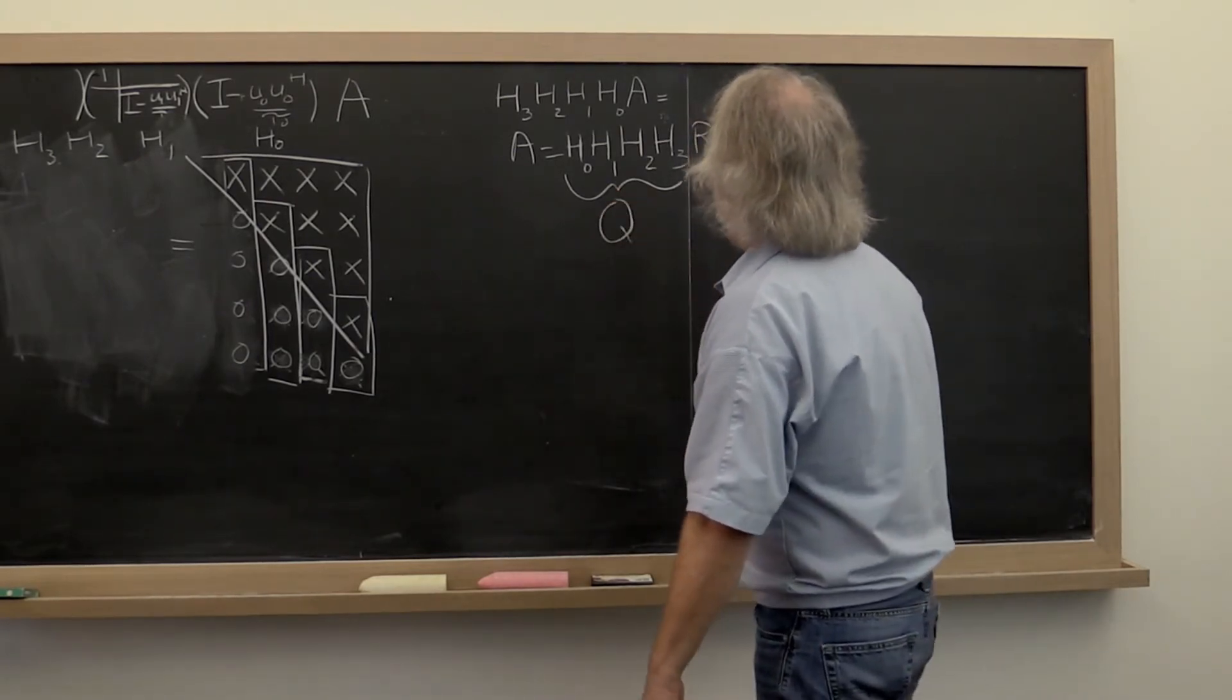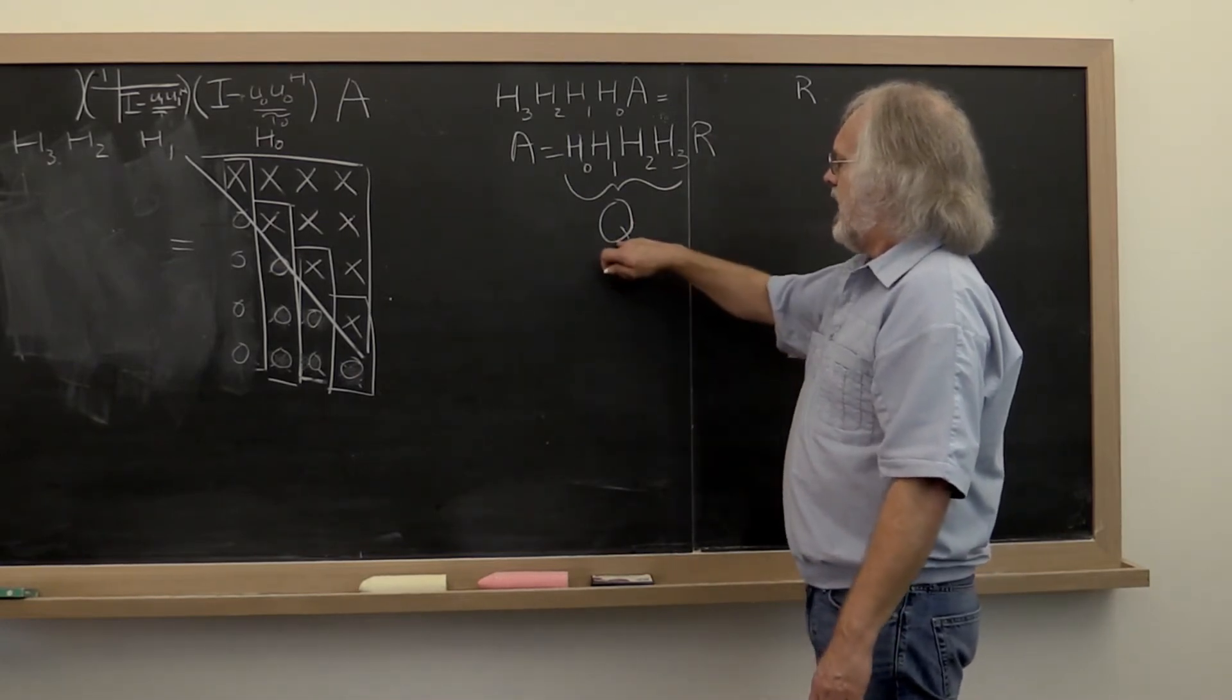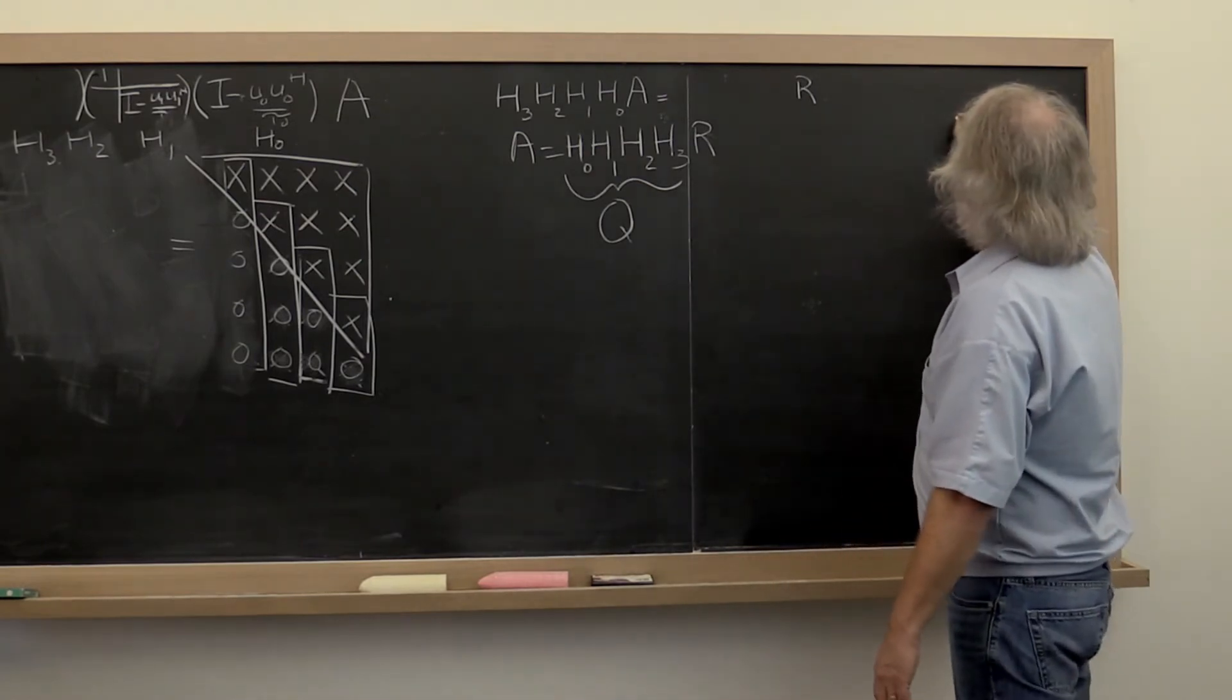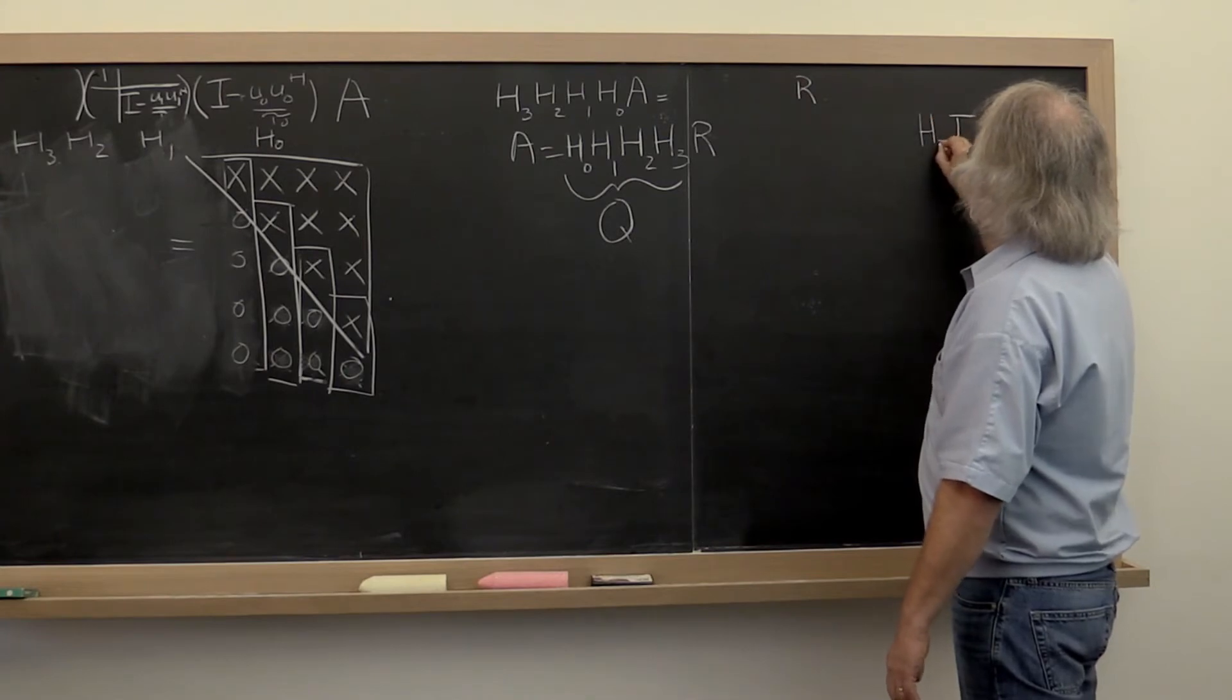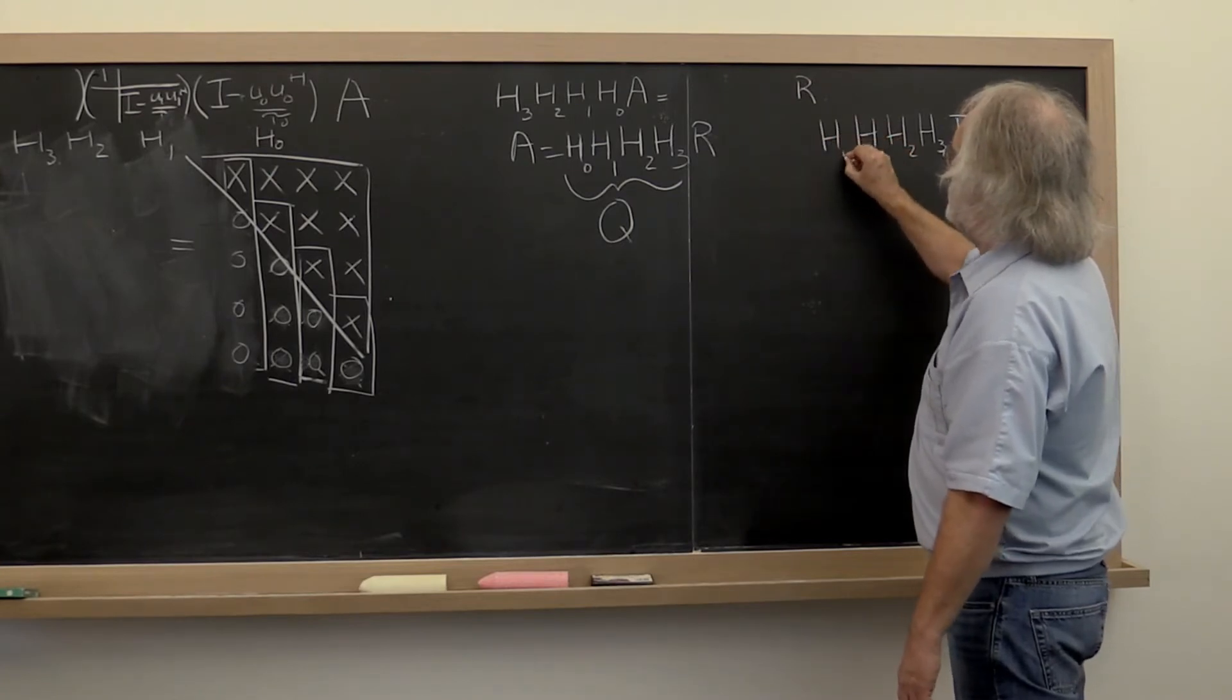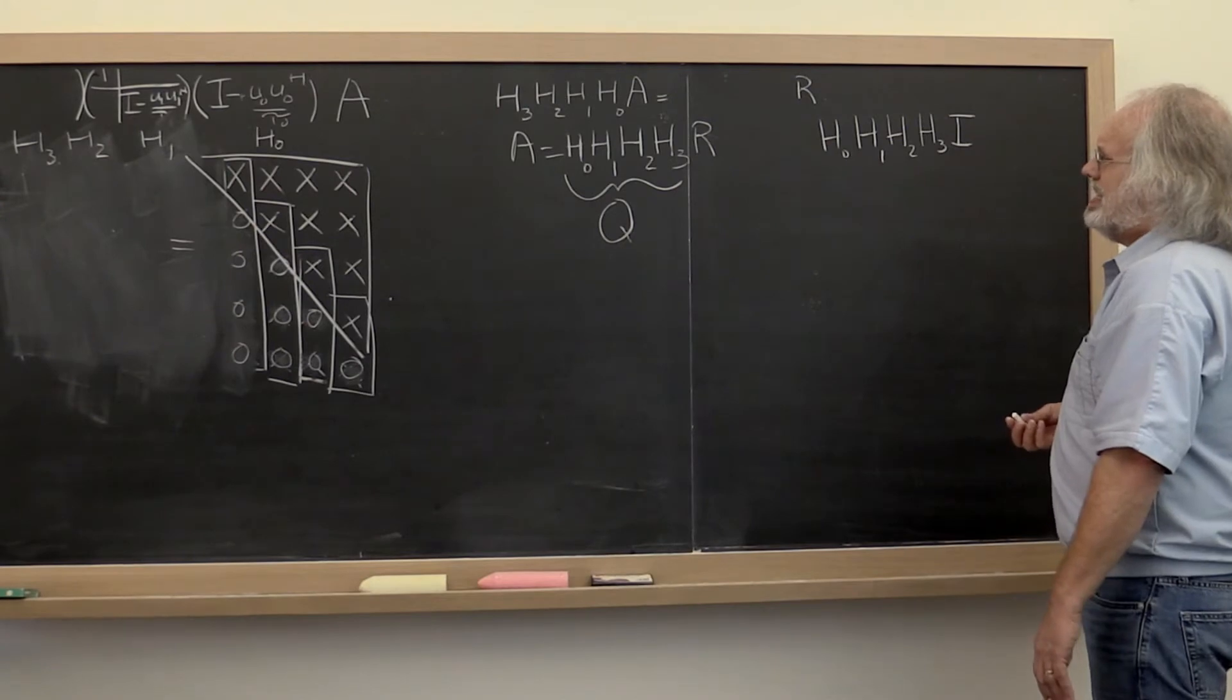So let's call that Q. The question then becomes how do we compute Q? The way to think about this is that we can take our identity and multiply that by H3 and then by H2 and then by H1 and then by H0.